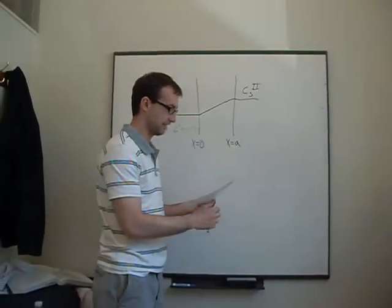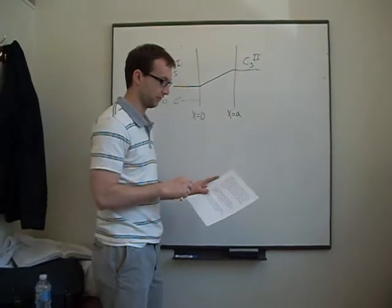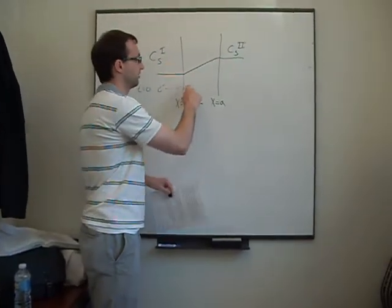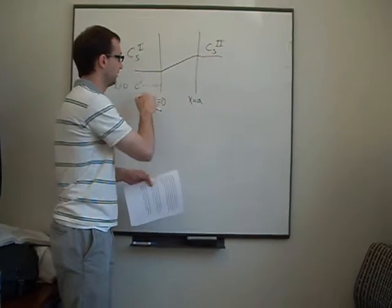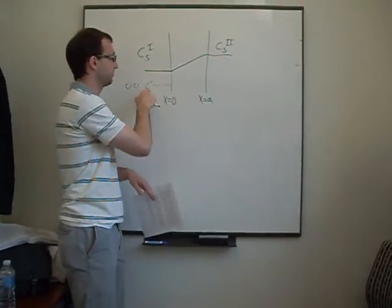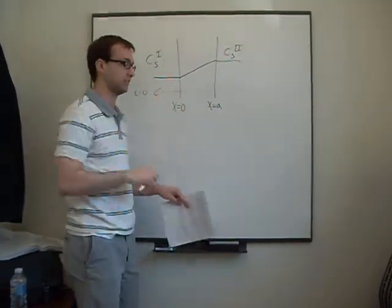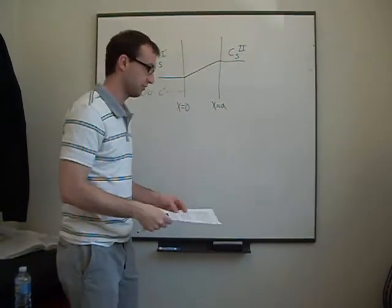And what the question is asking in part A is, first of all, we want to find a differential equation that's going to explain what's happening through this membrane. Since at time equals 0, the concentration C prime is dropped.